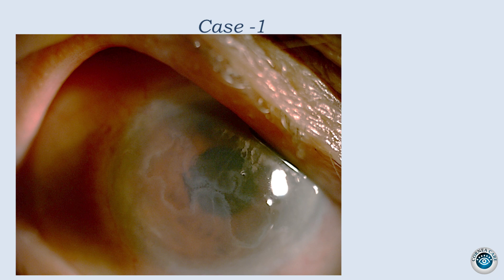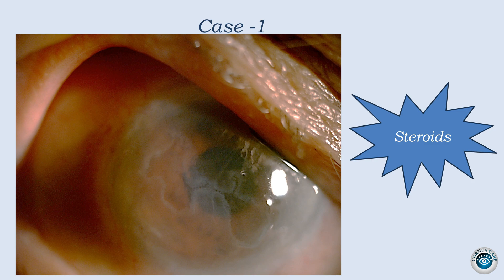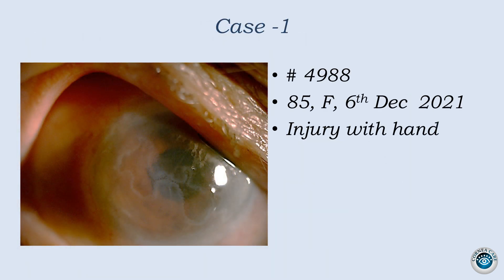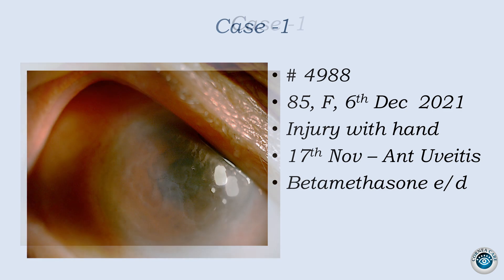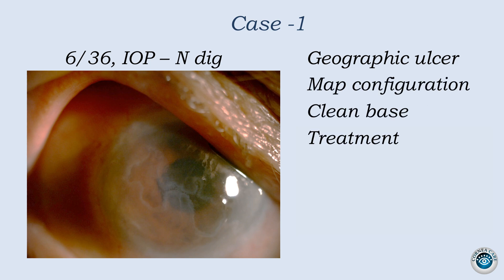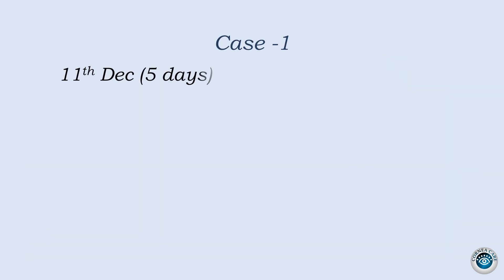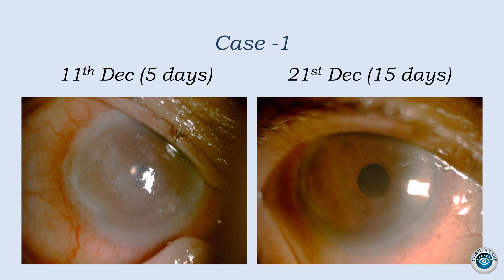The first case is a typical geographic ulcer. Steroids can be a trigger for virus activation, and it happened here. When this elderly lady got an injury, she was diagnosed as post-trauma uveitis and put on topical betamethasone. Later she developed this defect. Her steroids were stopped and she was referred. It's a classical presentation with a map-like shape and clean clear base, with no AC reaction at that time. We started the typical regime. Within 5 days the size reduced, the ointment was tapered, and in 2 weeks it was a normal-looking cornea.